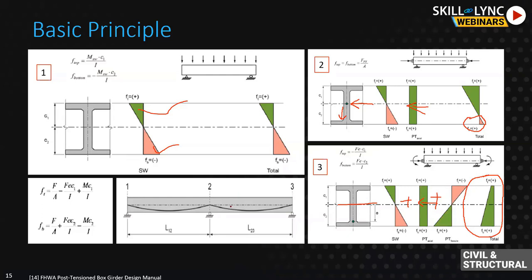For a continuous girder, tension is more at the bottom in the midspan and more at the top over the pier. You can play with the location of the strand - that's why we drape the strand or debond it. By changing the eccentricity along the length, you can control the moment and change the stress distribution as needed.